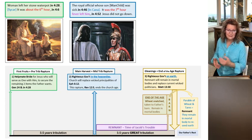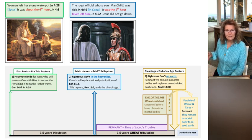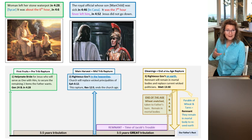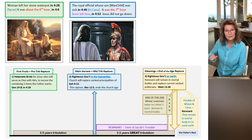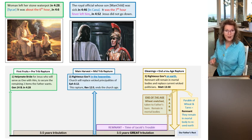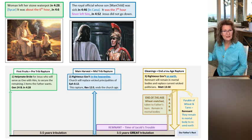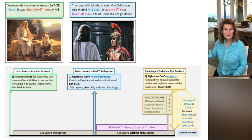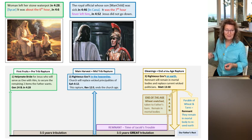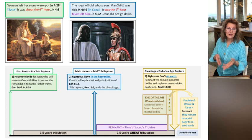We see through this royal official who interceded for his sick child in John 4:46 in Cana—though that's not where he was from. He was asking Jesus to come heal his son, and Jesus healed him without going down. He just spoke the word, and his son was healed of a fever at the seventh hour. The woman at the well was at about the sixth hour when she was raptured up.